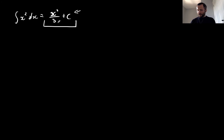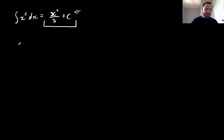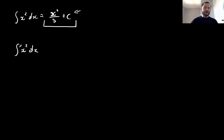What we want to look at in this video are definite integrals — integrals where we're actually finding the value of the integral. When finding the value we need to include the boundaries of the integral. For example, finding the value of the integral of x squared between 1 and 3. By convention, we write the lower bound at the lower tail and the upper bound at the upper part of the integral sign.